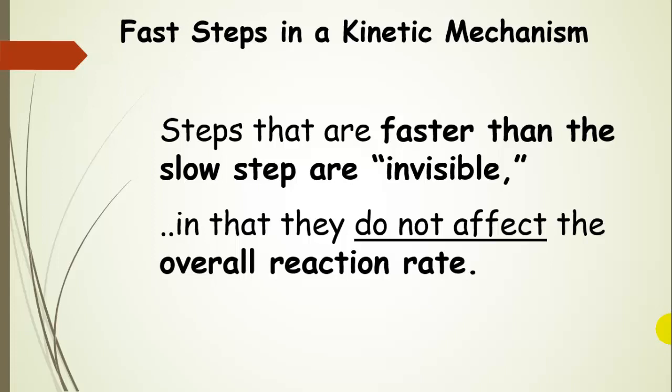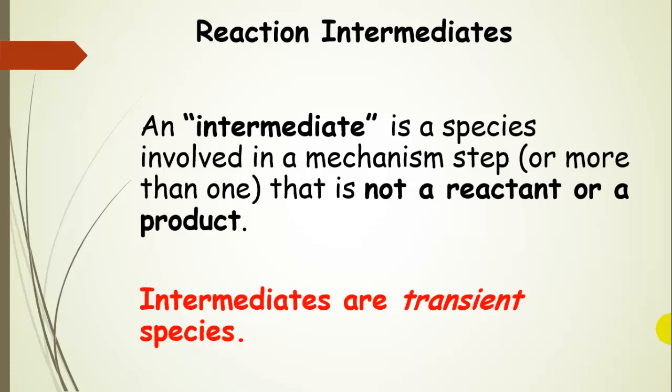Fast steps in a kinetic mechanism don't show up in the rate law, and that's because they're invisible. They have no effect on the overall reaction rate. Another term we need to talk about is something called a reaction intermediate. An intermediate is a species that's involved in a mechanism step that is not a reactant or a product. Intermediates are transient species. They only exist for a short period of time.